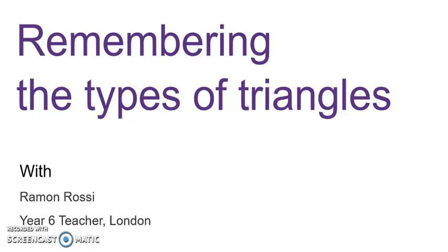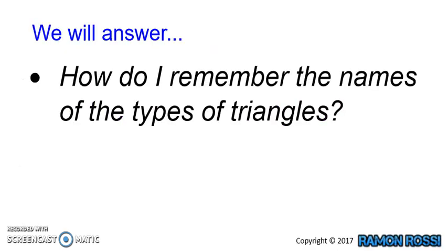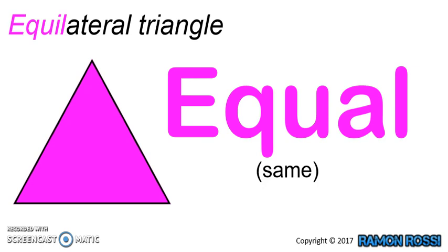Remembering the types of triangles. You're with Mr. Rossi and today we're answering this question: how do we remember the names of the different types of triangles? First of all, the equilateral triangle. Equilateral has 'equal' at the beginning, and equal means the same. An equilateral triangle has all of its sides the same length. We can show it like this. It also has all of its angles equal, or the same.